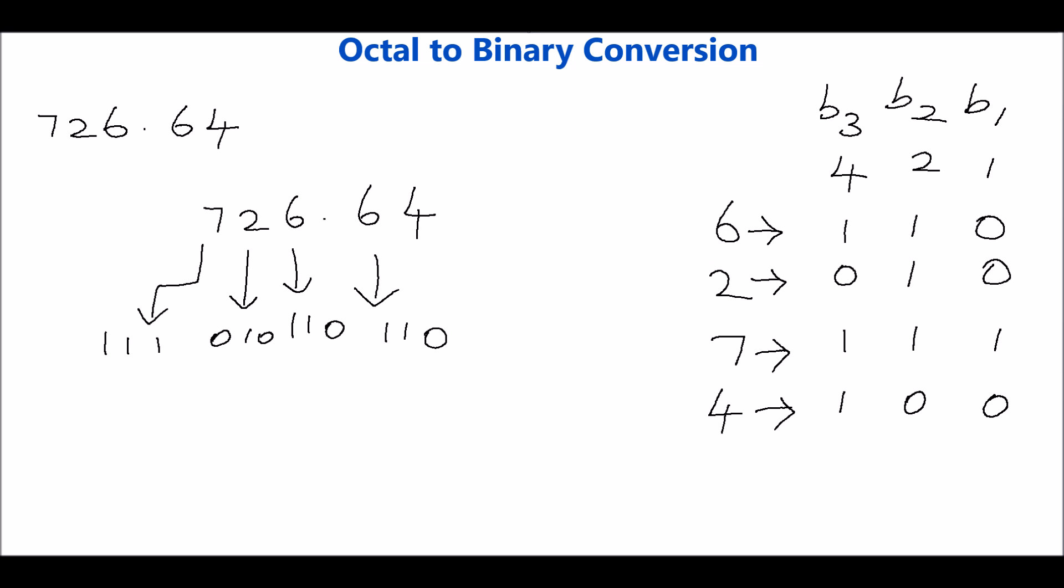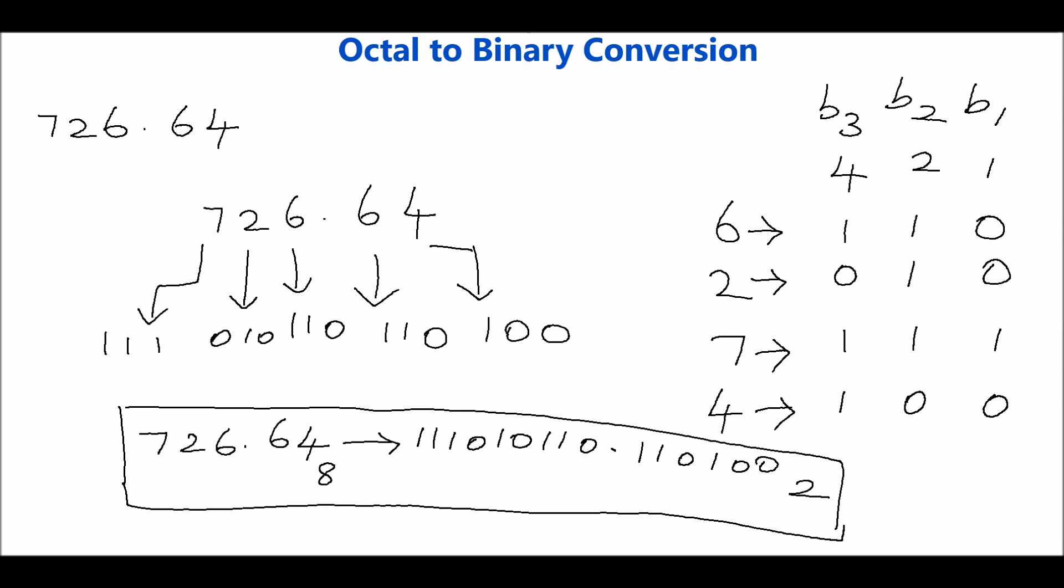So octal number to binary conversion is very simple. Only thing is we have to individually convert each digit of octal number to its corresponding binary number. For octal the base is 8, so only with the help of 3 bits we can represent the octal numbers from 0 to 7. Hope you understand this concept, thank you.